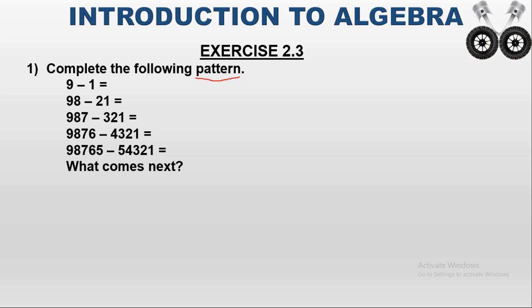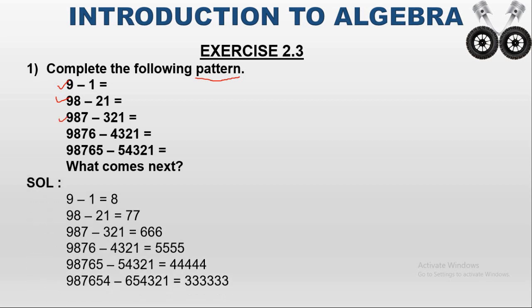In the first line we have a one-digit number, second line a two-digit number, third line a three-digit number, fourth line a four-digit number, and fifth line a five-digit number. That means in the sixth line we should have a six-digit number.